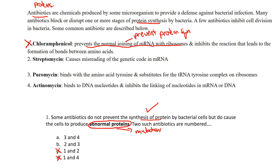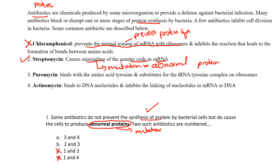Let's take a look at number two: it causes a misread in the genetic code in messenger RNA. We know that misreading can lead to mutations that will actually cause an abnormal protein to be produced. So that's what we're looking for. Number two is correct, and if you look at the options, option A doesn't even have two in there, so we can eliminate that as well.